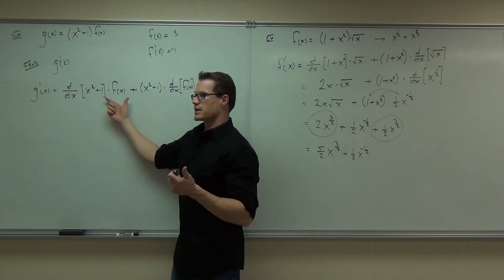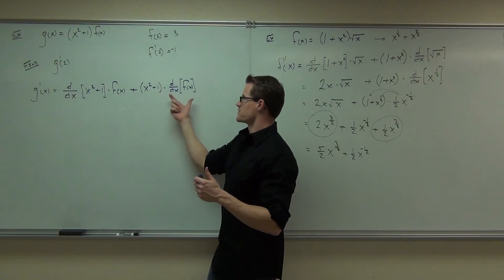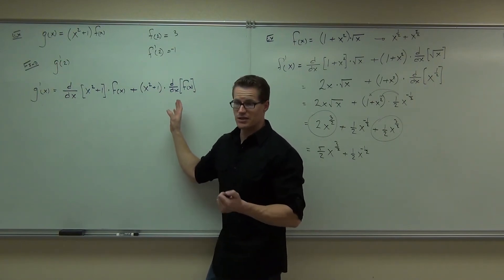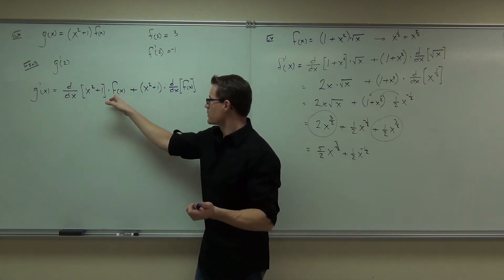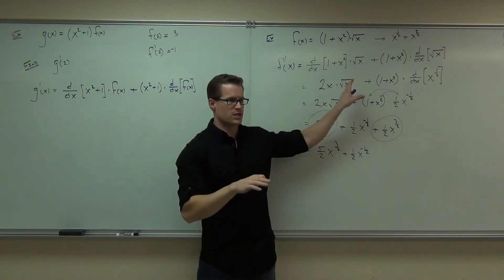So what I'd like you to do, just follow the product rule with this. Go ahead and do that now. Follow the product rule. I want you to find g prime of x, derivative of the first times the second plus the first times the derivative of the second. Just write it out. Would you agree that that is, in fact, the product rule for this problem? Derivative of the first times the second plus the first times the derivative of the second.